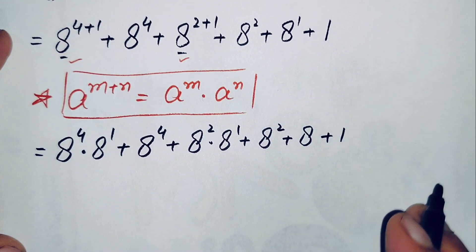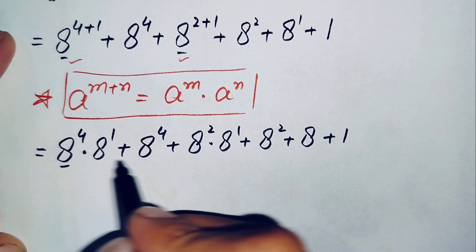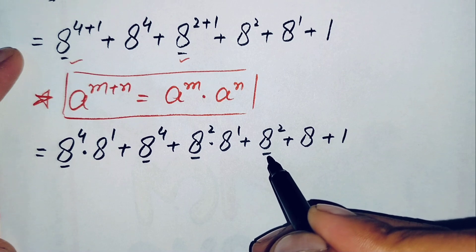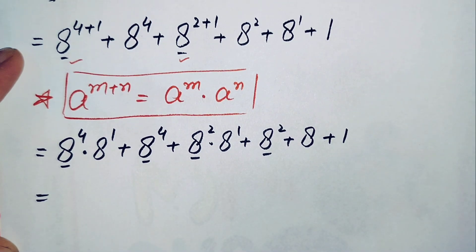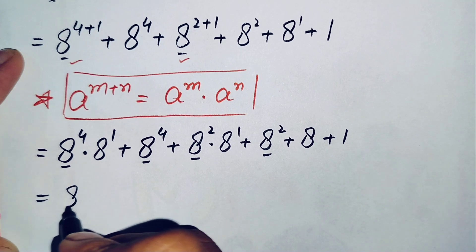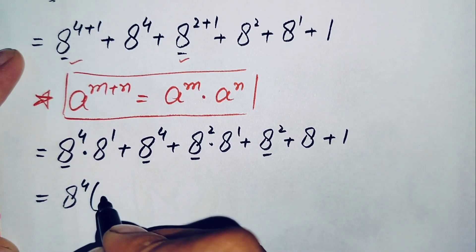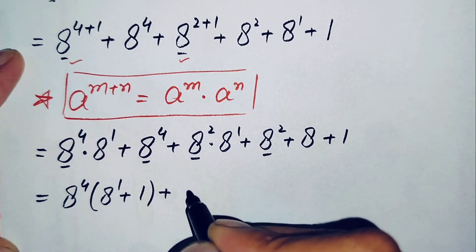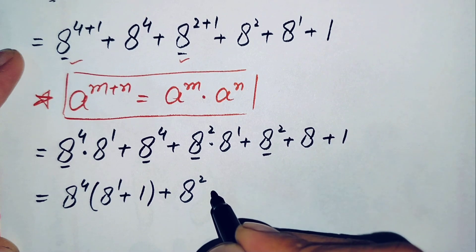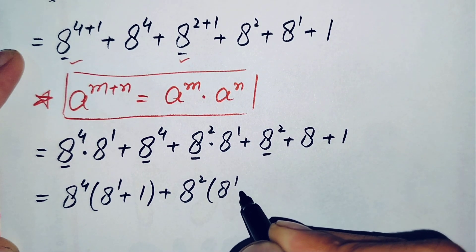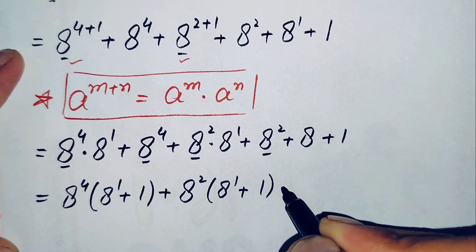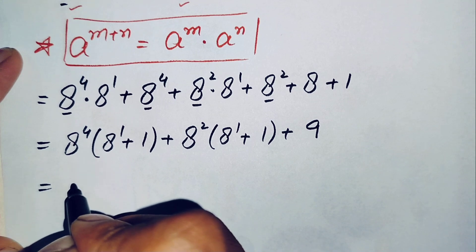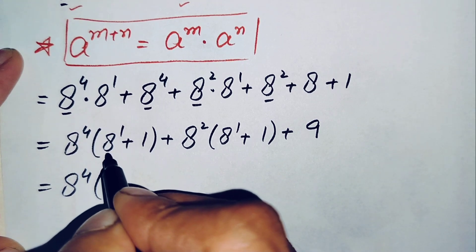Now in the next step, we take x to the power 4 common from the first two terms, and x to the power 2 common from the third and fourth terms. So this equation becomes: x to the power 4 times (x to the power 1 plus 1), plus x to the power 2 times (x to the power 1 plus 1), plus 8 plus 1 is 9.